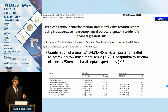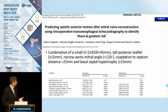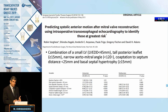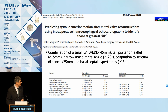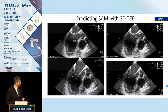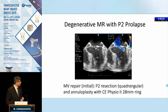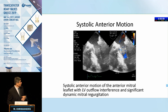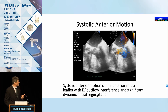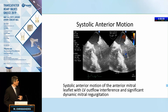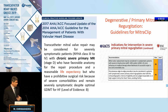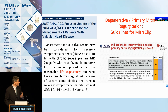In addition, we need to tell the surgeon if there's a risk of systolic anterior motion (SAM). Data show that a small left ventricle, a tall posterior leaflet, a narrow aortomitral angle, coaptation-to-septum distance of less than 25 mm, or LV hypertrophy of the basal septum may indicate significant SAM risk. Here is a patient with a P2 prolapse repair who developed severe SAM at the end of the procedure, requiring a return to bypass to correct it.